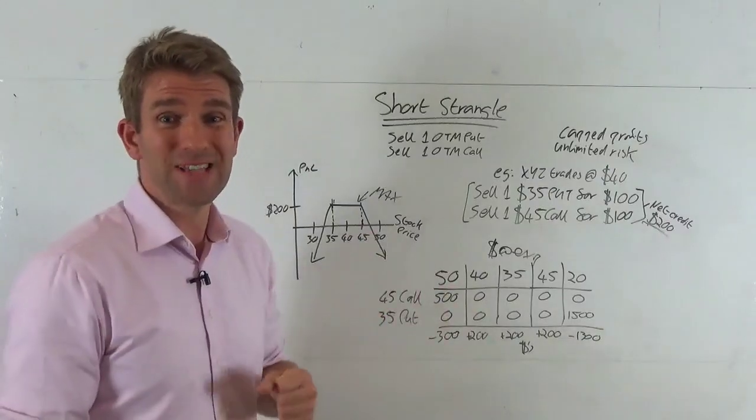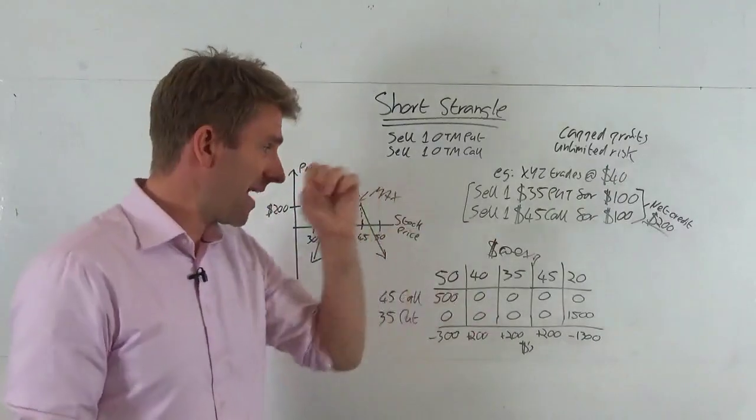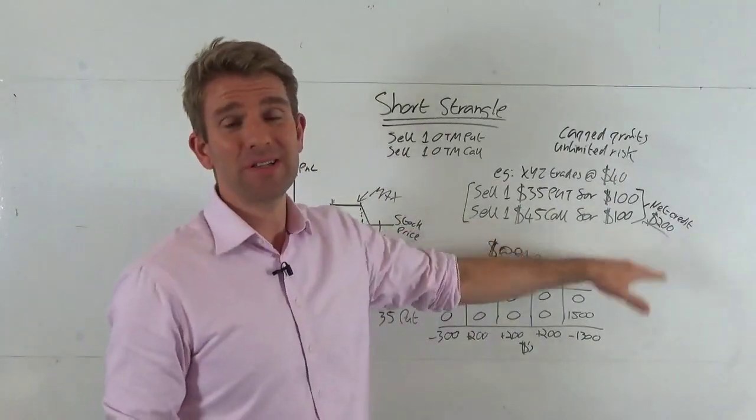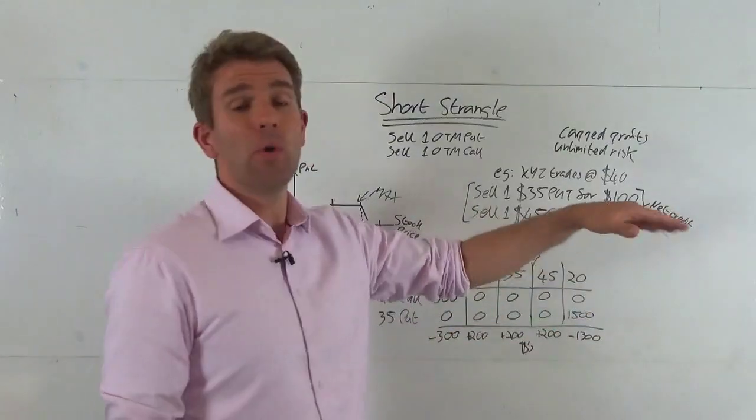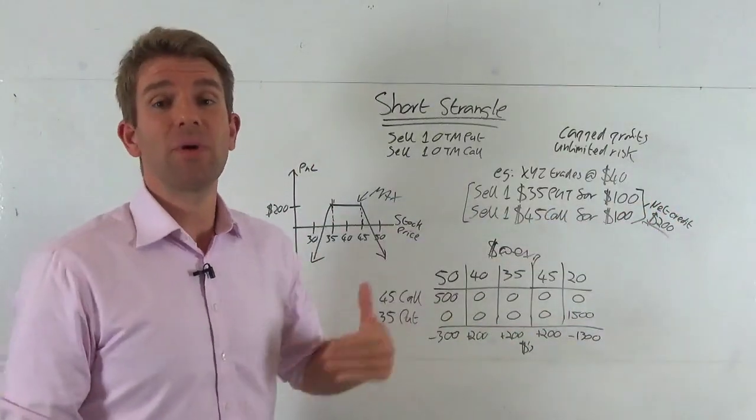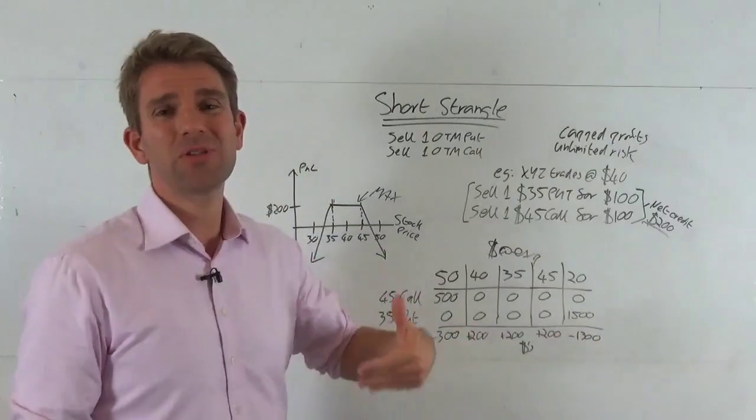However, don't forget not all is lost, well it's not the greatest thing, but we received $100 for that, so we have to pay out $1400, but of course $1400 out and received $100 for the worthless call, so it's $1300 net. That's our loss if it went to $20.